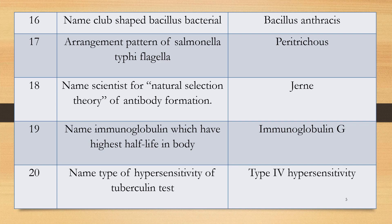Question 20: Name the type of hypersensitivity of the tuberculin allergic test. Answer: Type 4 hypersensitivity is produced by tuberculin testing. This is a frequently asked question.